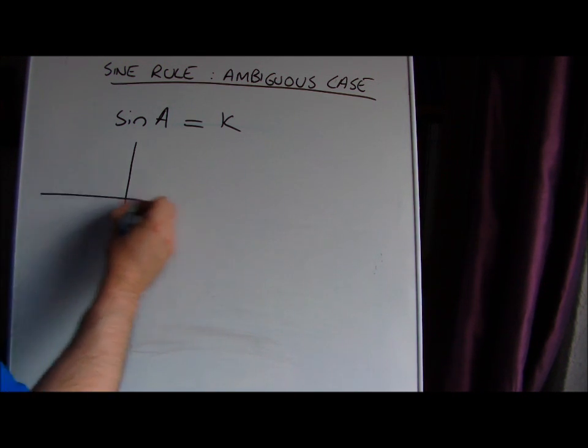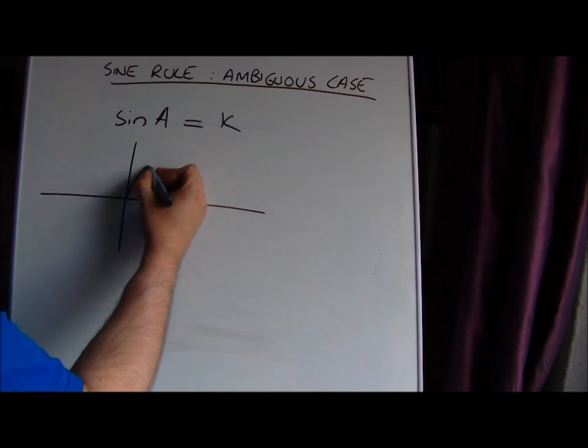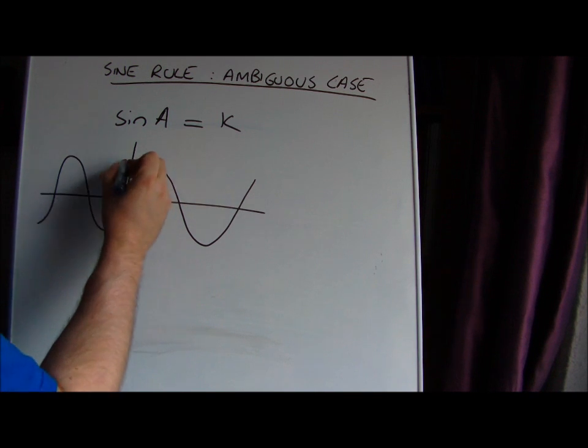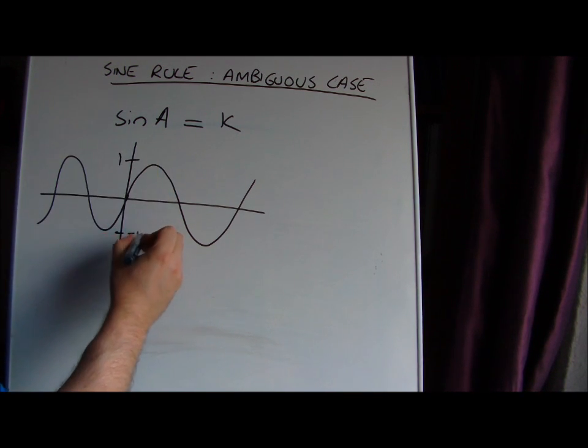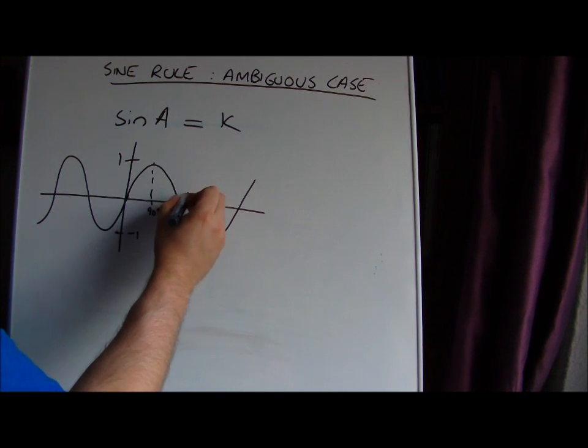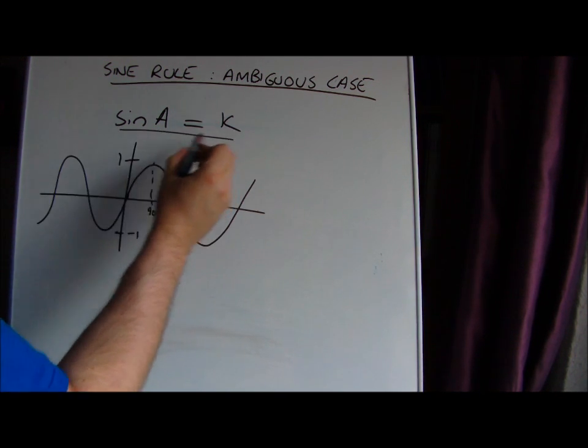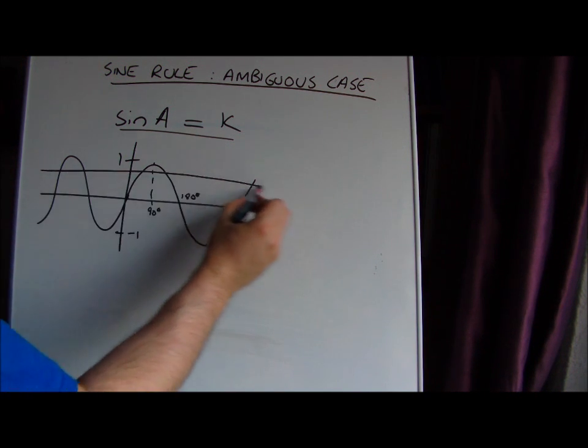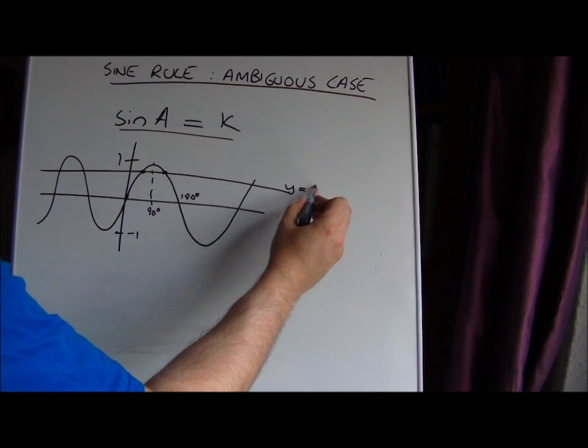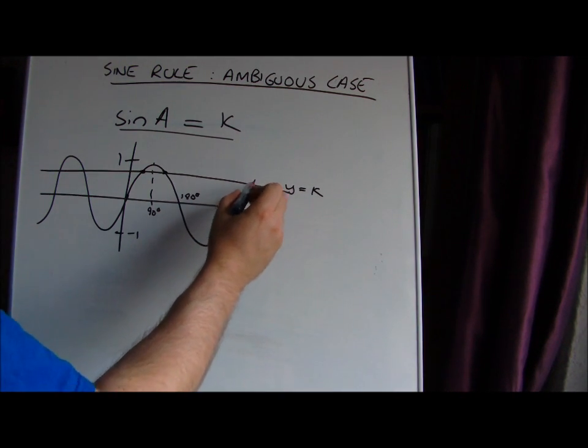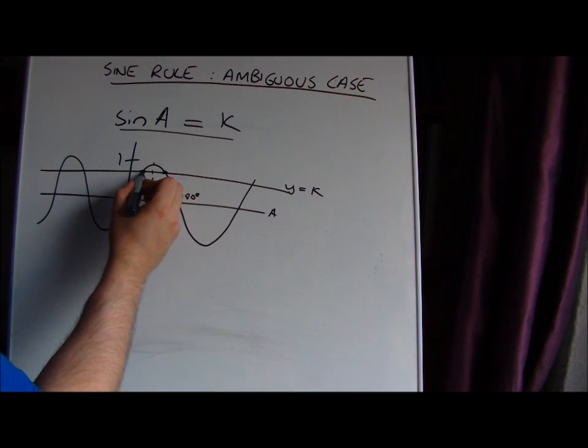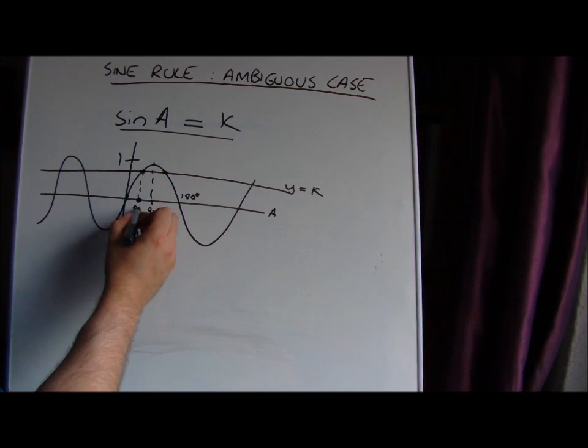We can understand this to be true because when we consider the sine curve, which goes up to one down to negative one, with 90 degrees and 180 degrees here, solving this equation is equivalent to finding where the line y equals k intersects this. This would be the value for A. Your calculator will give you the principal value.